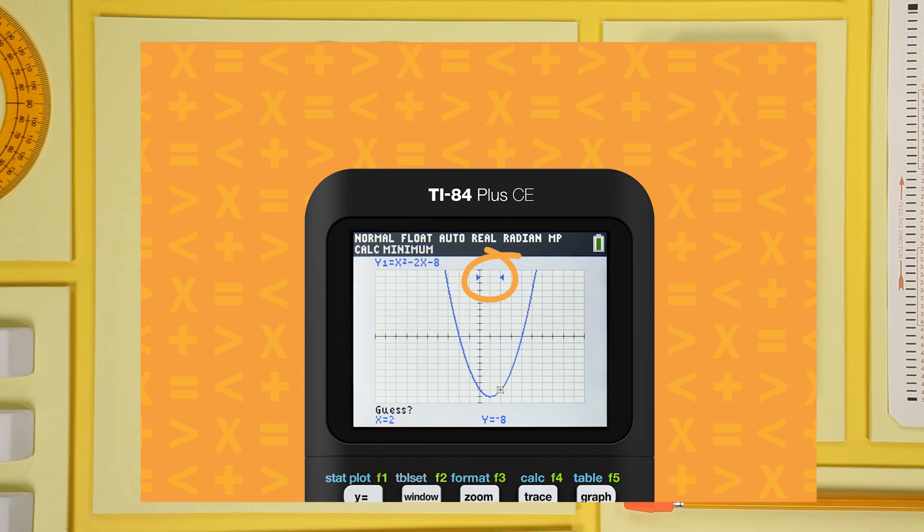Now, the calculator will ask you to guess the x-coordinate of the minimum. This looks like the minimum occurs when x equals 1. So press 1 and enter. The minimum is negative 9 at x equals 1.